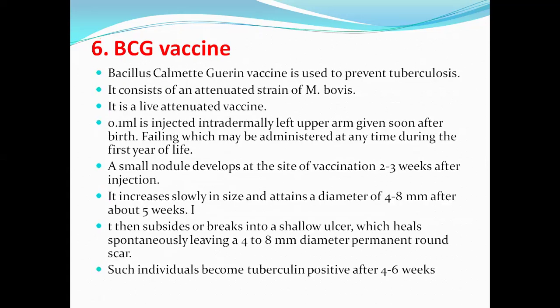Next question: BCG vaccine. BCG stands for Bacillus Calmette-Guérin. Scientists Calmette and Guérin developed this vaccine, which prevents tuberculosis. It is a heterologous vaccine consisting of Mycobacterium bovis that gives protection from Mycobacterium tuberculosis. It is a live attenuated vaccine consisting of attenuated strains of Mycobacterium bovis.